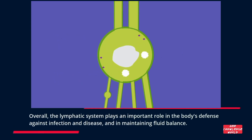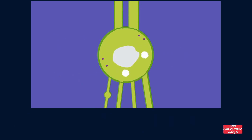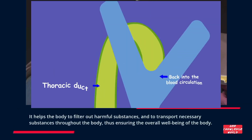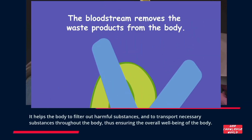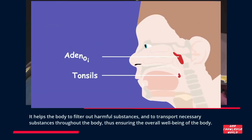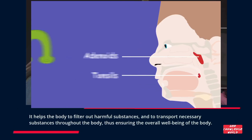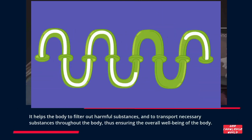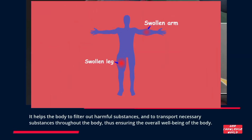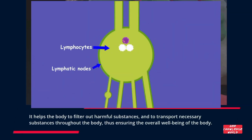Overall, the lymphatic system plays an important role in the body's defense against infection and disease, and in maintaining fluid balance. It helps the body to filter out harmful substances and to transport necessary substances throughout the body, thus ensuring the overall well-being of the body.